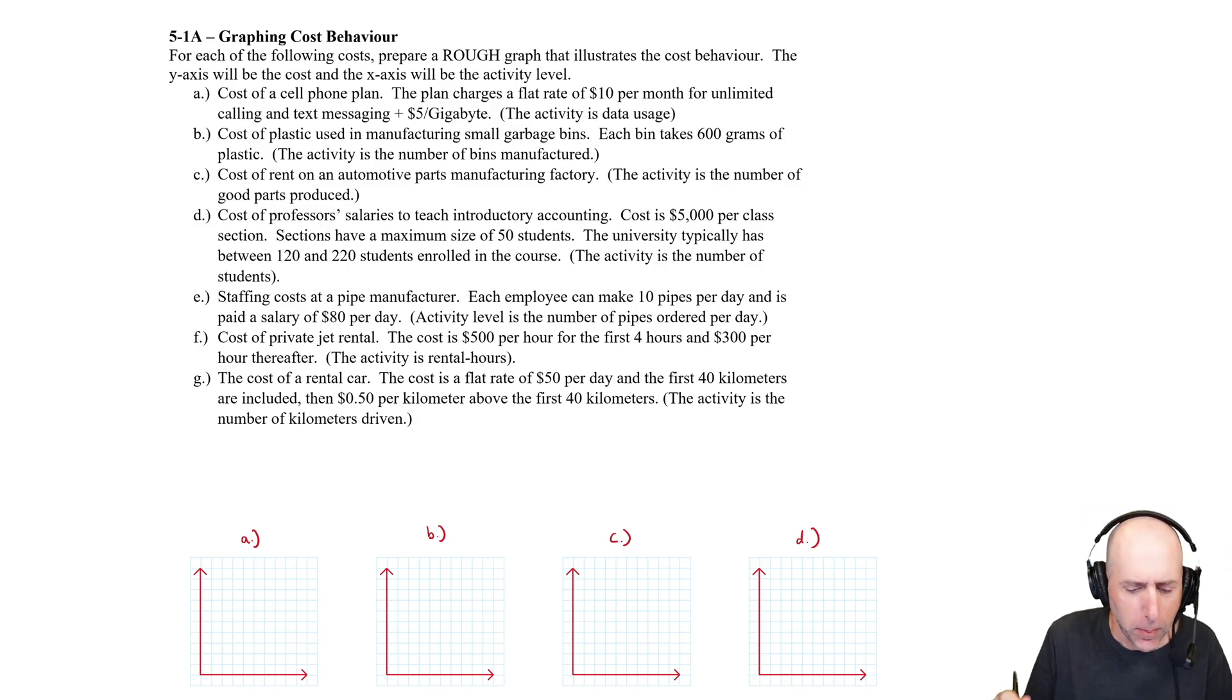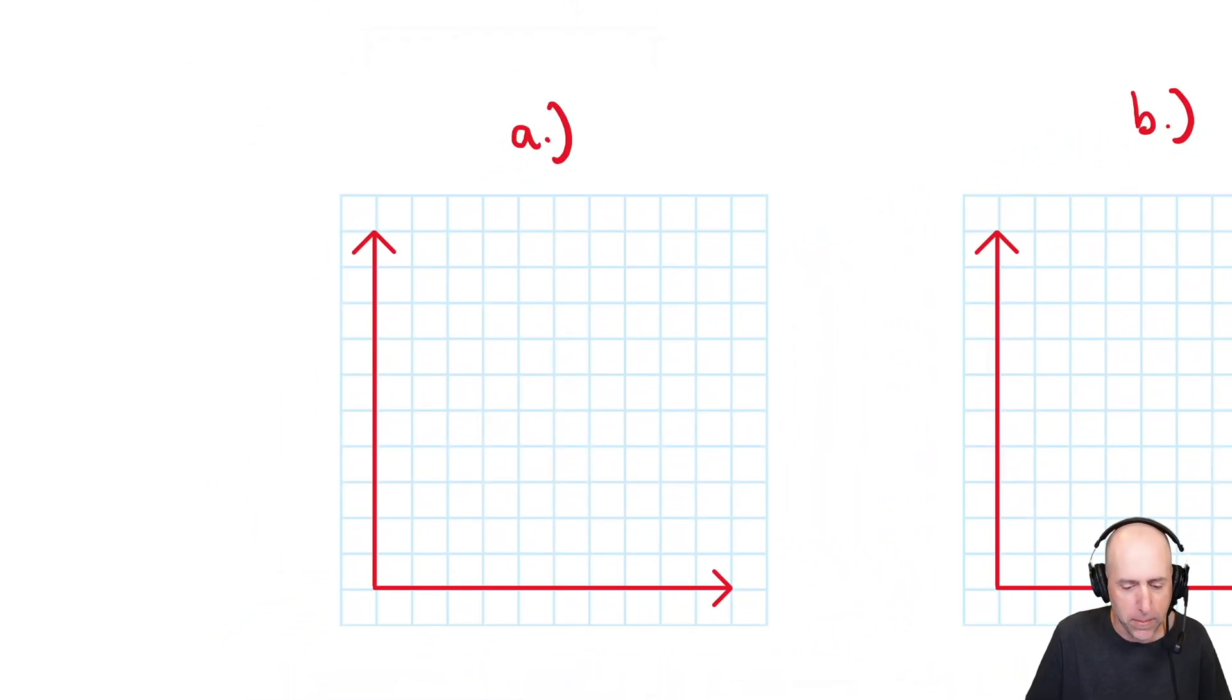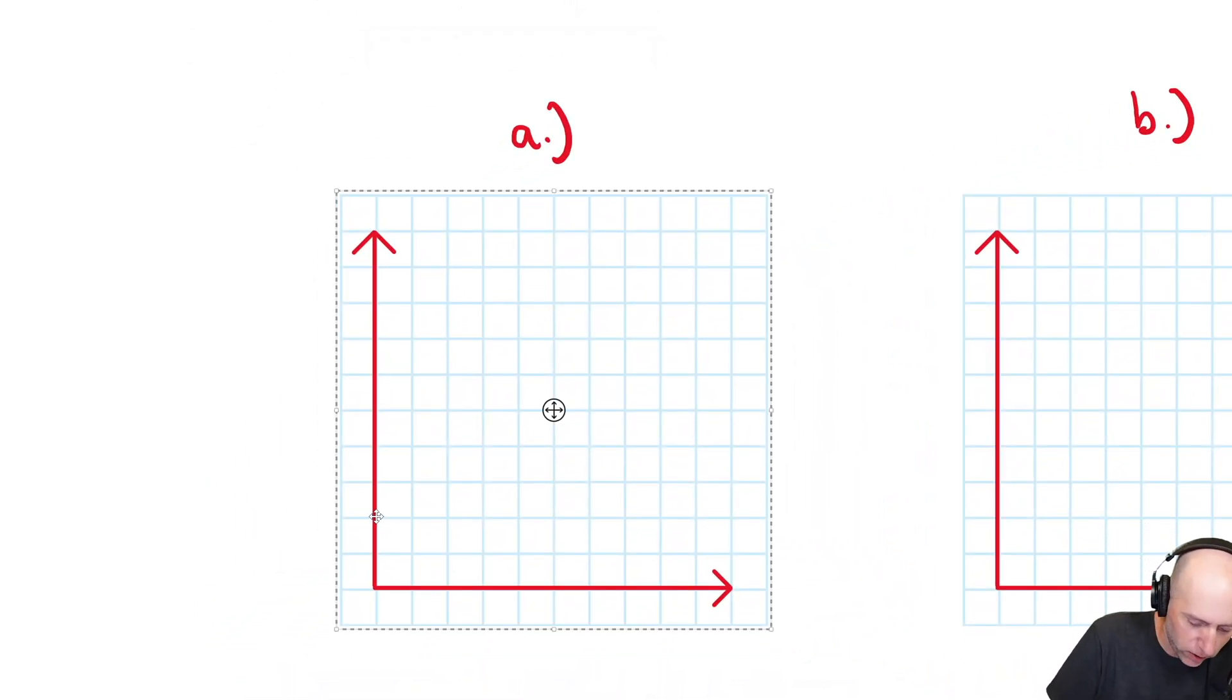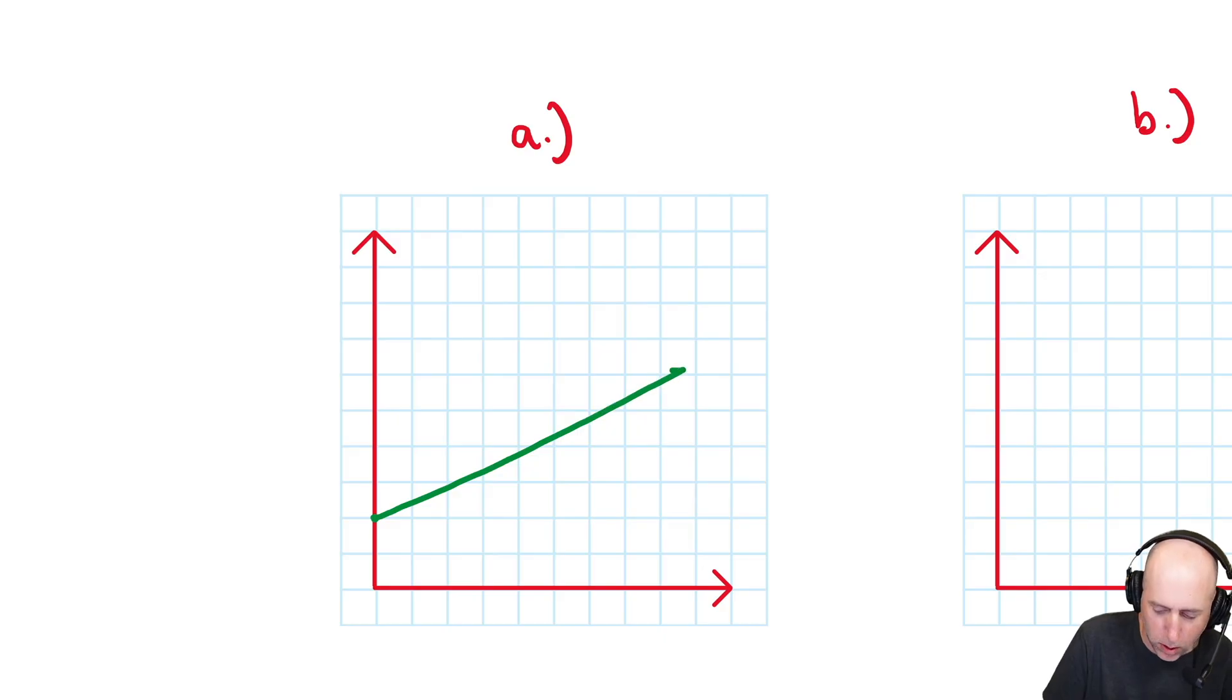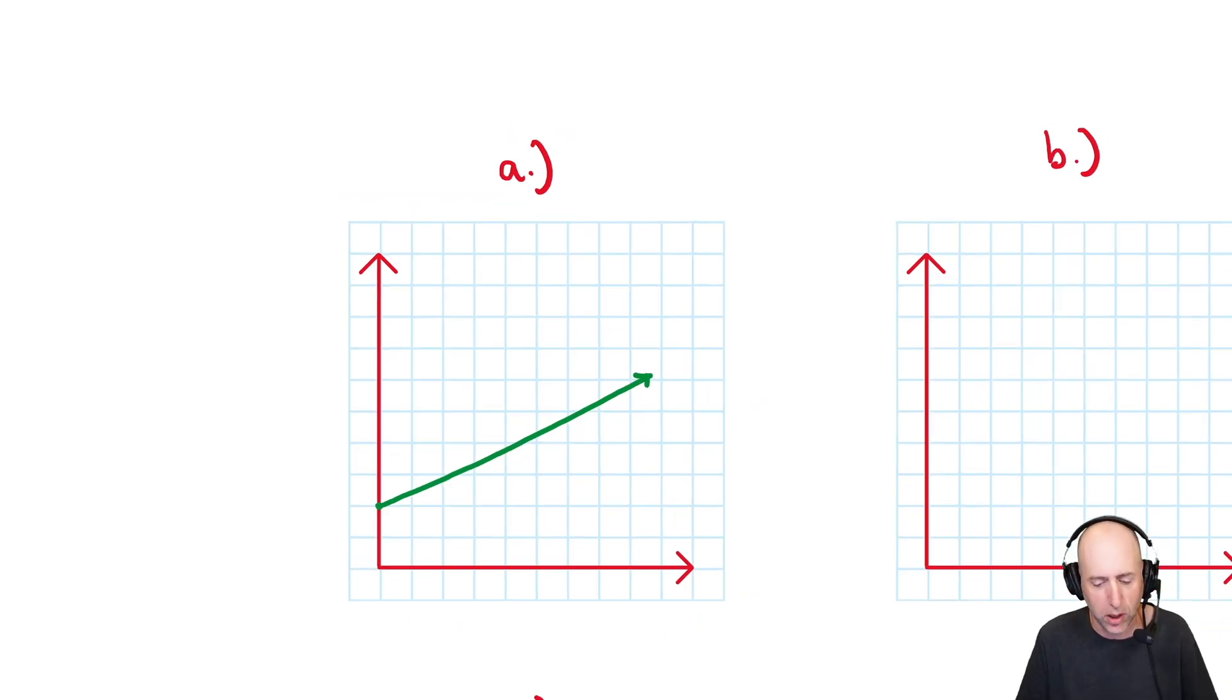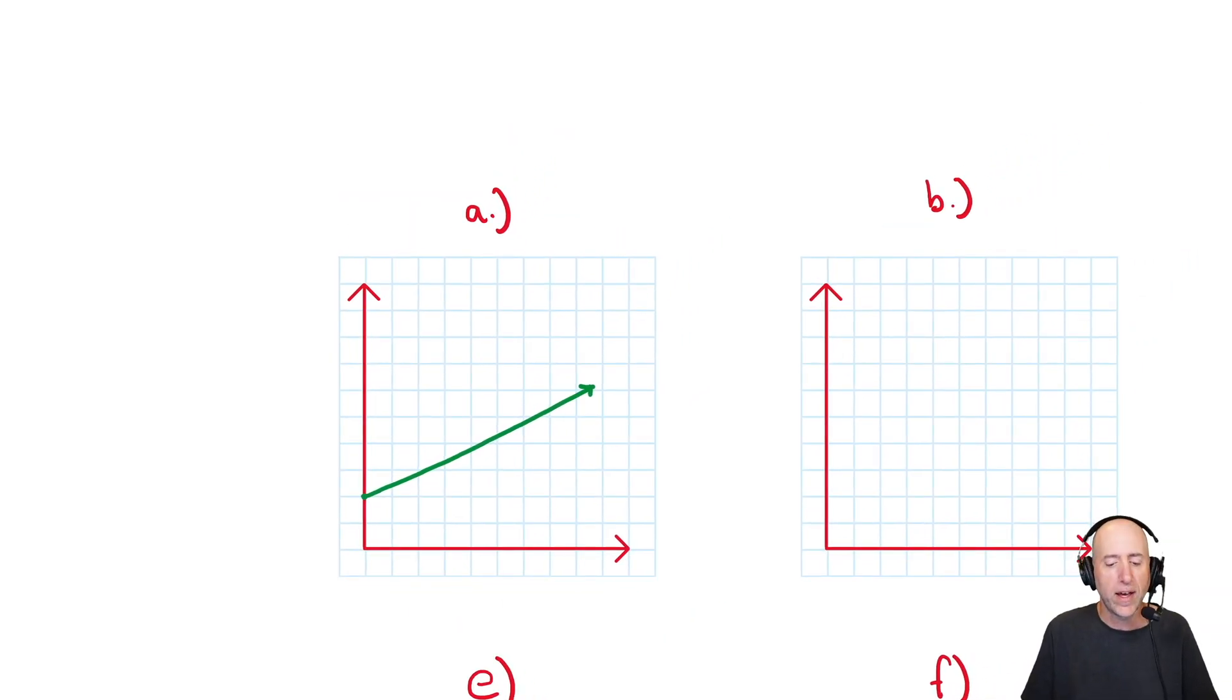So the first one: cost of a cell phone plan. The plan charges a flat rate of $10 a month for unlimited calling and texting and $5 a gigabyte for data. Okay, so what is that going to look like in terms of a graph? Well, at minimum we're paying $10 a month, so there's a fixed cost element to this. It's going to start here. It doesn't start from zero. And the more data you use, the more you pay. So it's going to look something like that.